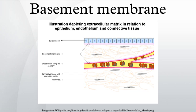The basal lamina layer can further be divided into two layers. The clear layer closer to the epithelium is called the lamina lucida, while the dense layer closer to the connective tissue is called the lamina densa. The electron-dense lamina densa membrane is about 30 to 70 nanometers thick, and consists of an underlying network of reticular collagen-4 fibrils which average 30 nanometers in diameter and 0.1 to 2 micrometers in thickness.